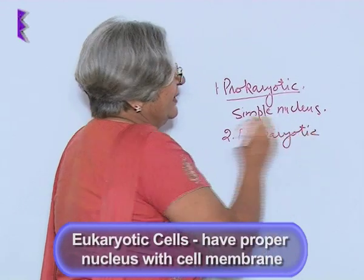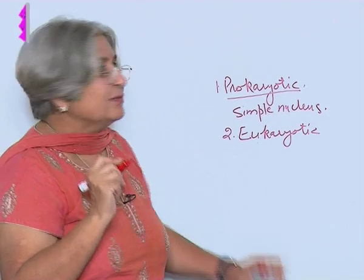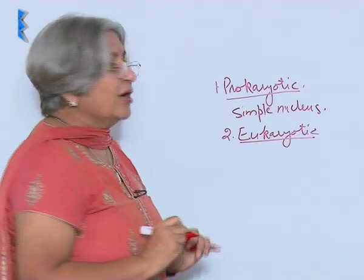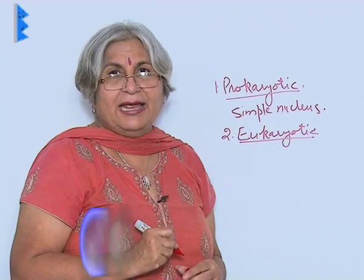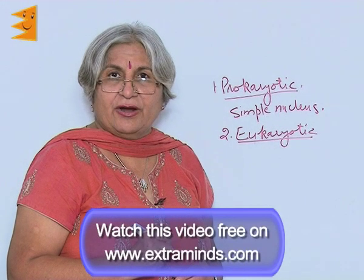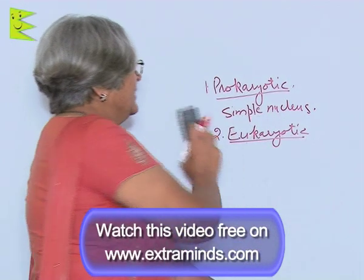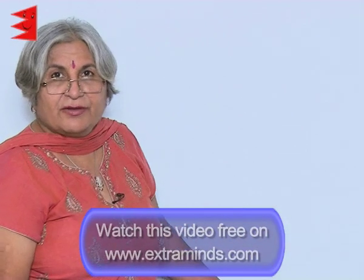In the case of eukaryotic cells, there is a proper nucleus with a cell membrane. For your level, this much is enough: there can be two types of cells — prokaryotic and eukaryotic. Blue-green algae and bacteria have prokaryotic cells, while human beings and other living beings have eukaryotic cells.